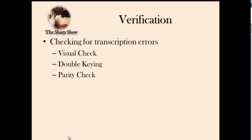Verification is very different from validation. Validation is making sure that data is reasonable. Verification is double-checking. Ways to check for transcription errors — when people have written something down wrong — include a visual check, where you physically look at the data to see if there are any problems, and double keying, where you have to enter the information twice. Parity check is basically checking that data has not been corrupted while being transmitted.